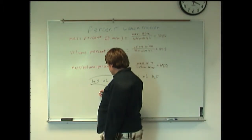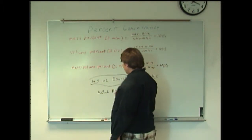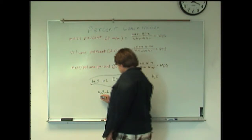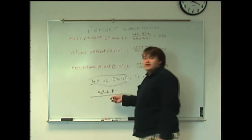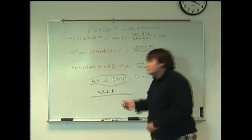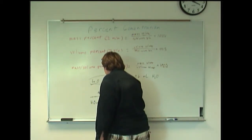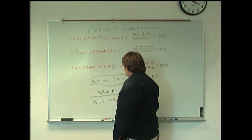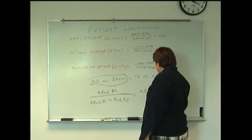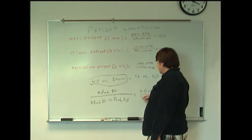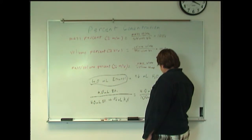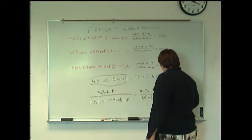So we take the four milliliters of ethanol. I'll just abbreviate ET from here out. Then we want to divide by the total volume of the ethanol and the water. So four milliliters of ethanol plus 96 milliliters of water. So you have four milliliters of ethanol over 100 milliliters total times 100%.